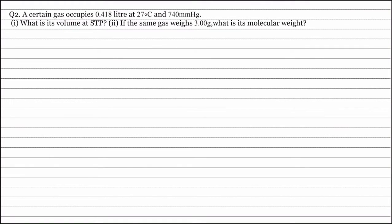Question 2. A certain gas occupies 0.418 litre at 27 degree centigrade and 740 millimetre of mercury.